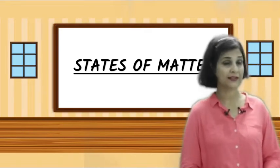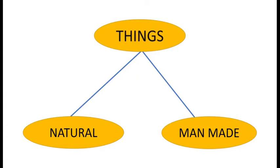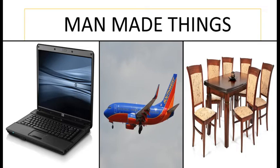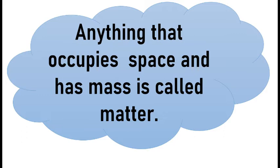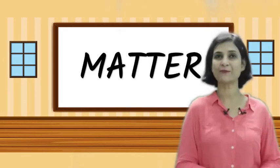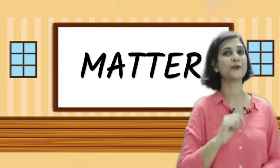So now we have understood that everything around us is made up of matter, and matter is found in three states: liquid, solid, and gas. Quick recap: things in our surroundings are either natural or man-made. Natural things are provided by nature — plants, rocks, rivers, and animals. Man-made things are made by human beings — laptops, airplanes, and furniture. Everything, whether natural or man-made, is made up of matter — anything that occupies space and has mass. There are three states of matter: solid, liquid, and gas. We will meet very soon to learn about states of matter in detail. Till then, take good care of yourselves and your family. Bye bye!